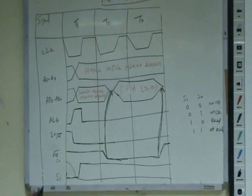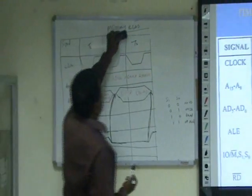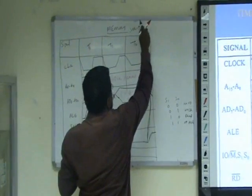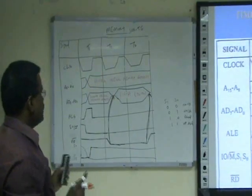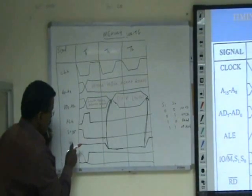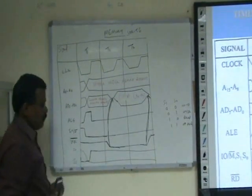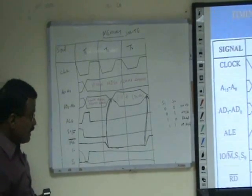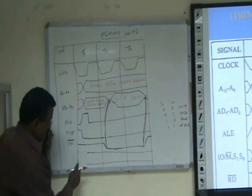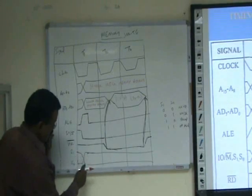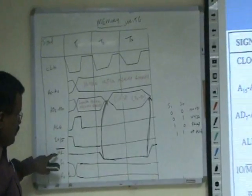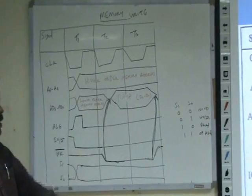Now let us discuss the timing diagram for memory write. If we generate a signal called write bar, then for write, S0 is 1 and S1 is 0. This is the timing diagram for memory write. Every explanation is the same — instead of read bar, you expand it with write bar.